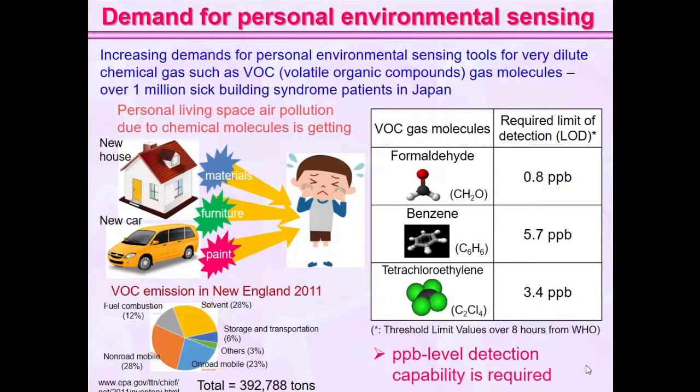Especially, for example, formaldehyde at a very low concentration of around 0.8 parts per billion, or benzene at 5.7 parts per billion, or tetrachloroethylene at 3.4 parts per billion — if humans are exposed to this low concentration level for eight hours, then it has a health effect. That's one of the main issues: even though the concentration is low, it leads to problems.